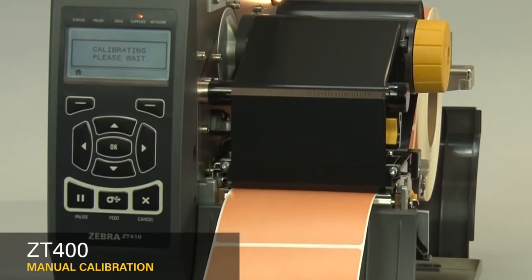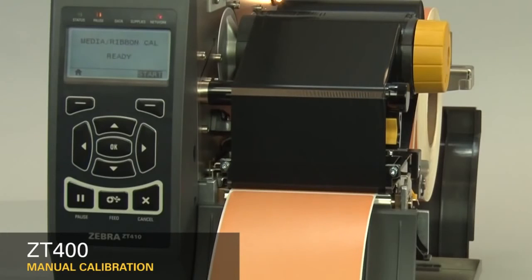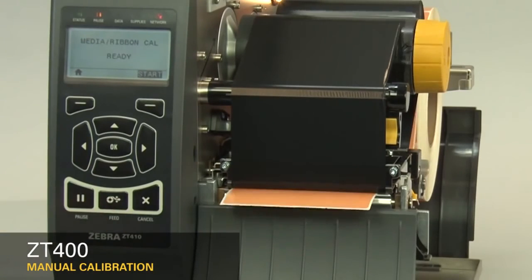When calibration is complete, the label should stop in the correct location. You can check that your calibration was successful by pressing the feed button and ensuring media feeds to the correct location.